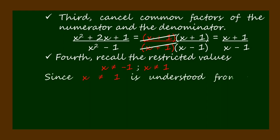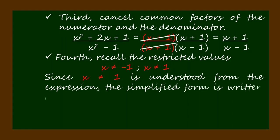Since x ≠ 1 has been understood from the expression, the simplified form is written as follows: (x + 1)/(x - 1) for x ≠ -1.